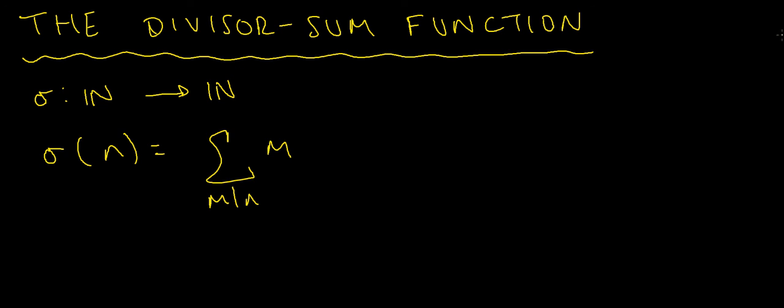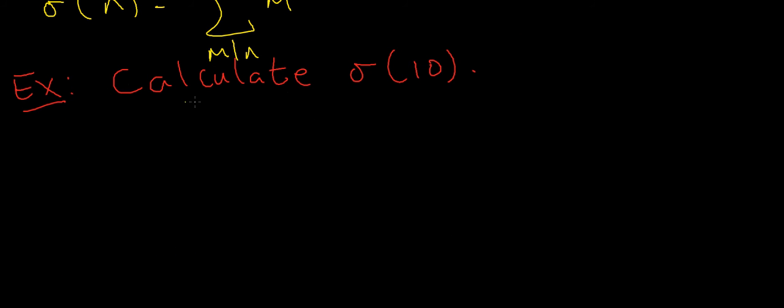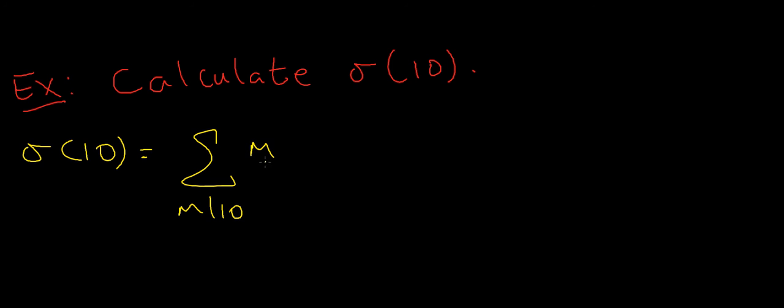Let's see that in action with an example. Let's calculate sigma of 10. By definition, sigma of 10 is the sum of all the positive divisors m of the integer 10, and the summand is m. In other words, every time we find a divisor of 10, we add that to the sum.